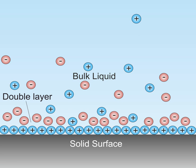A double layer (DL), also called an electrical double layer (EDL), is a structure that appears on the surface of an object when it is exposed to a fluid.